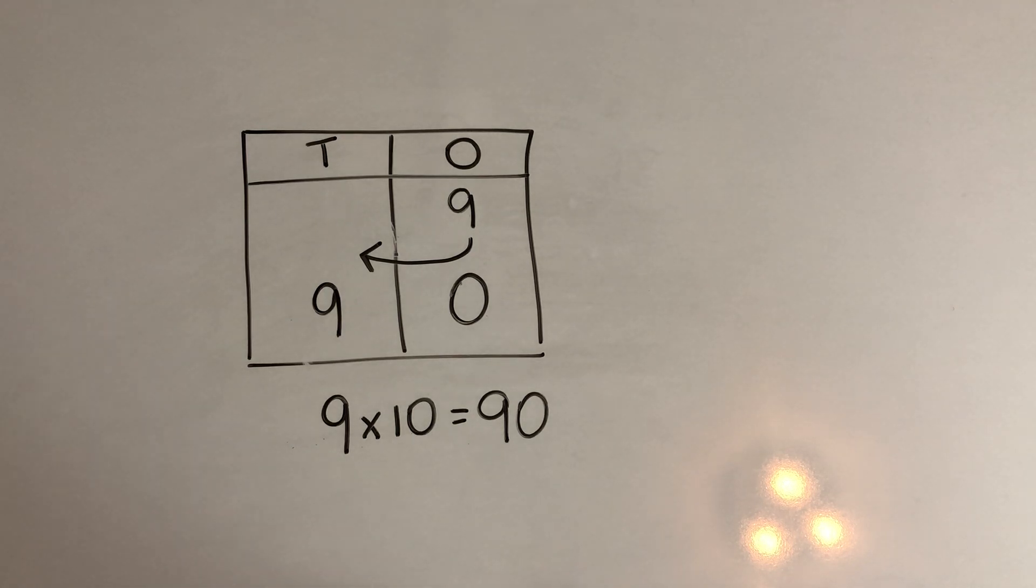Now sometimes you might have heard that when you multiply by 10, you can just add a 0. And you can when you're multiplying a whole number times 10. So that is something that you can use.